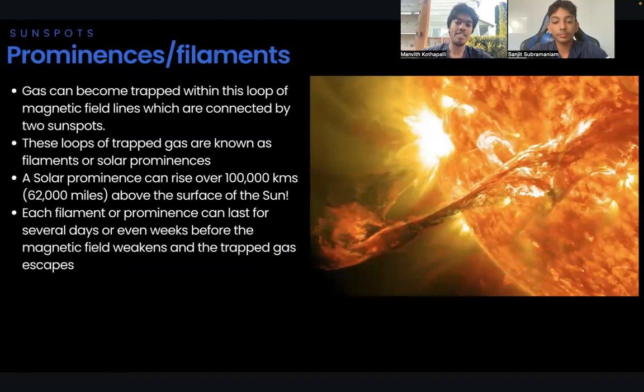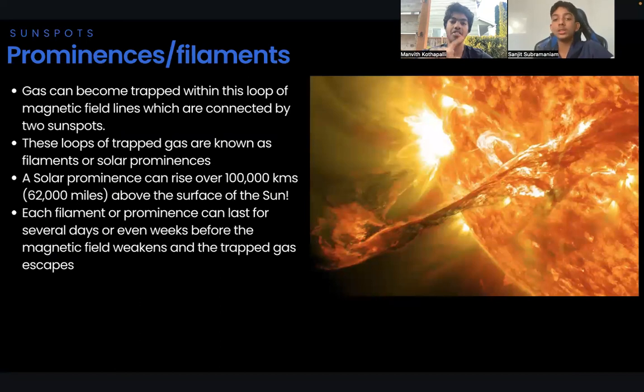Now let's talk about prominences and filaments. Many sunspots occur in pairs and are connected by a loop made out of magnetic field lines. If you could see these magnetic lines, it might look like a little arch with the two sunspots at the base and the magnetic field lines arcing out from the sun. Gas can become trapped within this loop and loops of trapped gas are known as filaments or solar prominences. A solar prominence can rise over 100,000 kilometers or 62,000 miles above the surface of the sun. Each filament or prominence can last for several days or even weeks before the magnetic field weakens and trapped gas escapes.